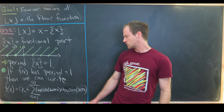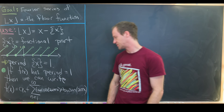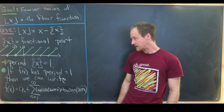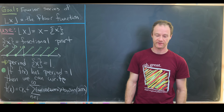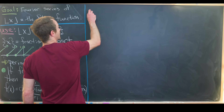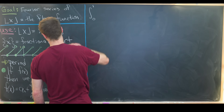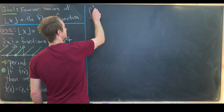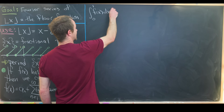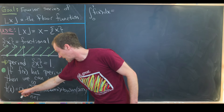Our goal now is to determine the coefficients a₀, aₙ, and bₙ in terms of our function f(x). Let's get started by taking the integral from zero to one of f(x) dx on both sides of the expansion.